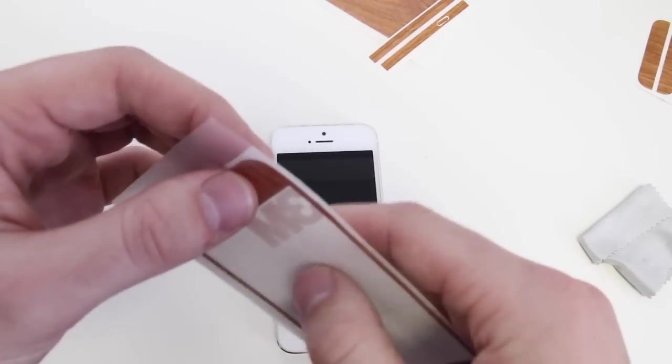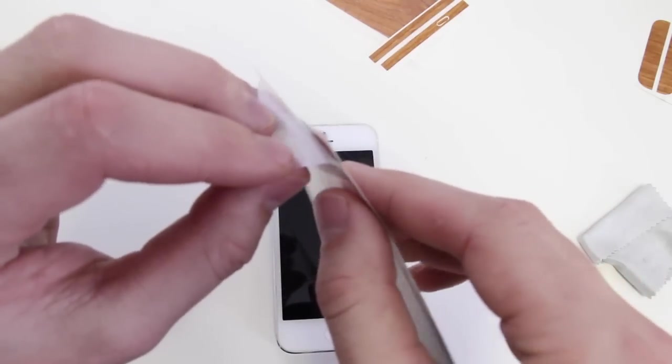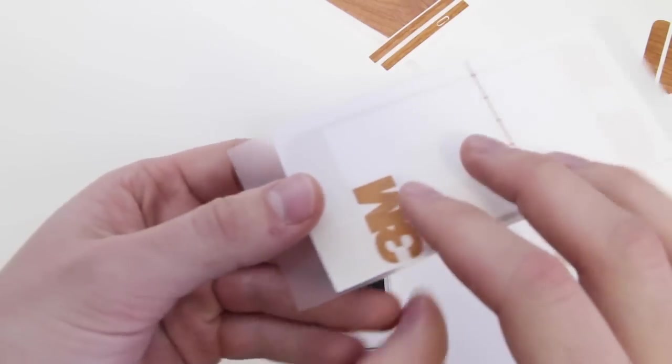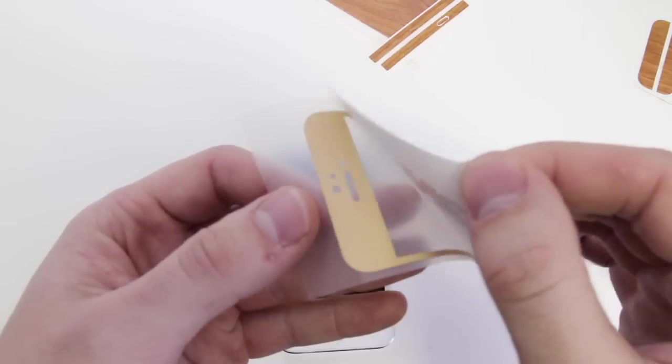For the thicker wraps, like the wood and the carbon fiber, sometimes it won't want to lift off when you're lifting off this clear transfer tape. So you can just lift the paper part, and it'll come right off with it.